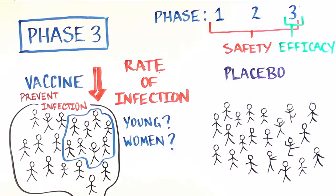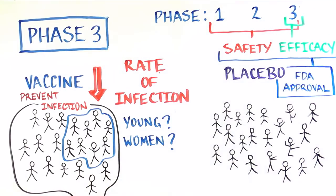This efficacy data is used by the FDA to decide if the vaccine should be licensed, and if so, for whom it is recommended.